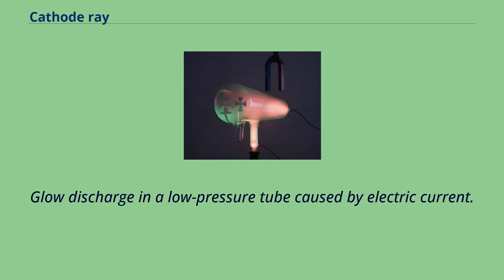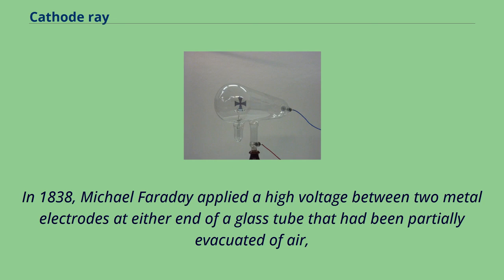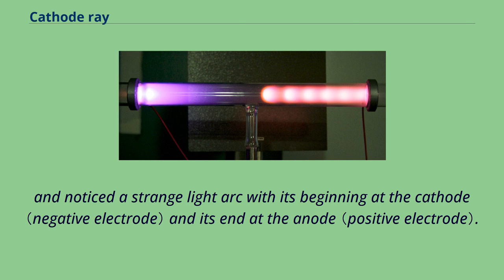Glow discharge in a low-pressure tube caused by electric current. In 1838, Michael Faraday applied a high voltage between two metal electrodes at either end of a glass tube that had been partially evacuated of air, and noticed a strange light arc with its beginning at the cathode and its end at the anode.